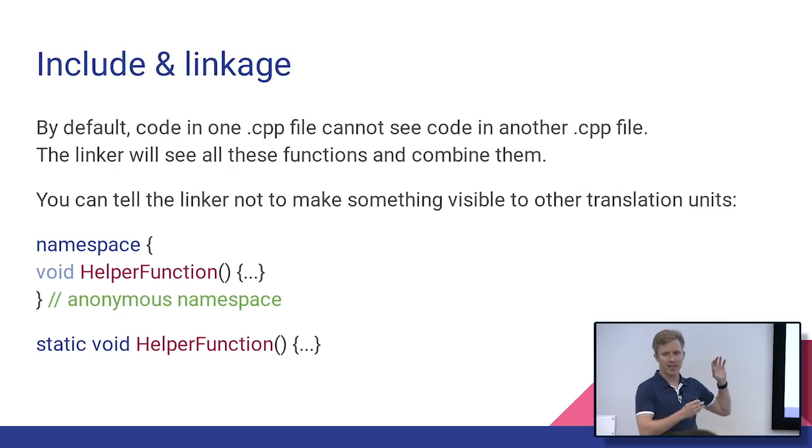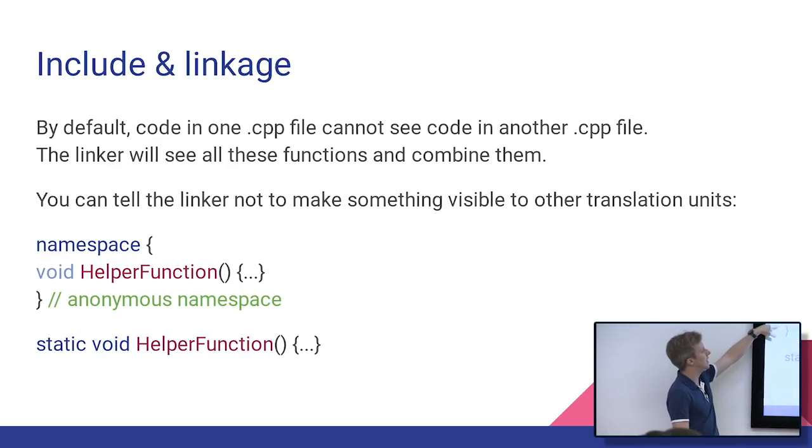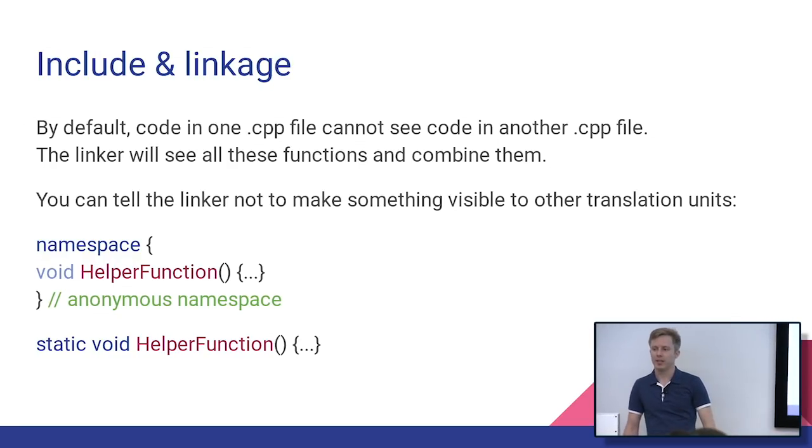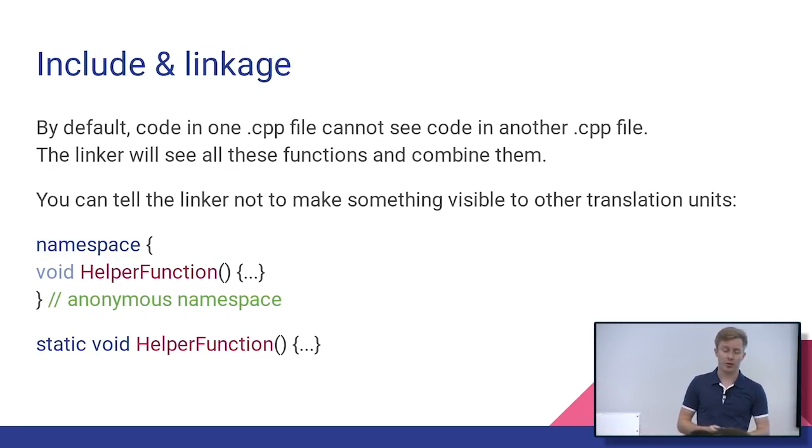So there's two ways of hiding it from other translation units. One is to put your function in an anonymous namespace like this. And the other is just to put static in the front. Static is kind of the old way we prefer for the anonymous namespace in Chrome.